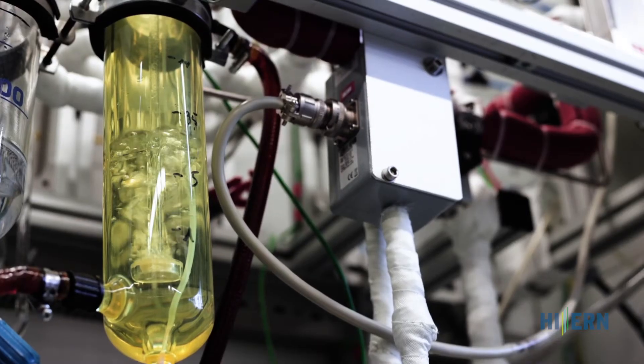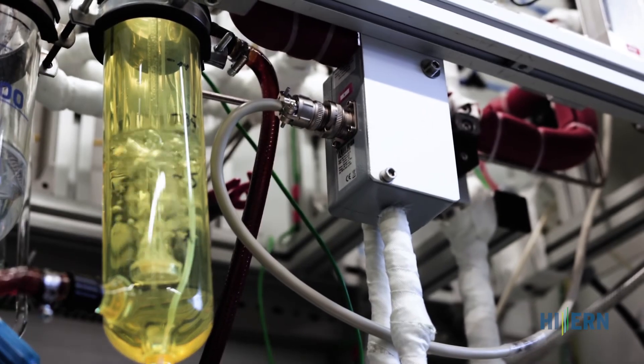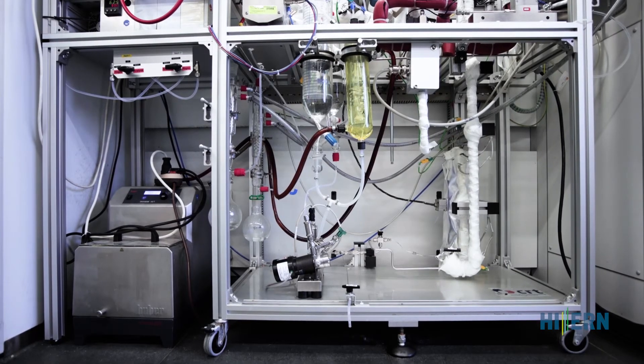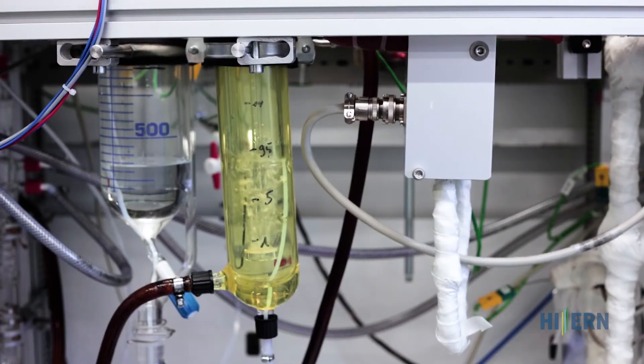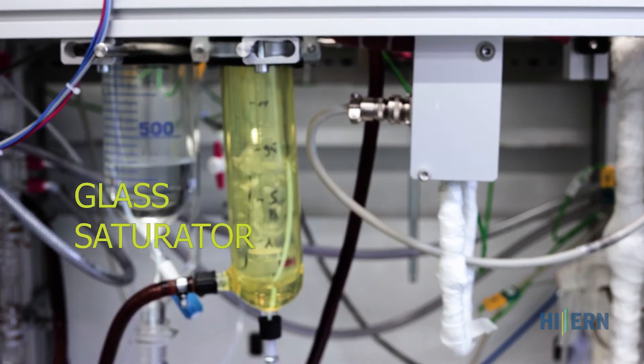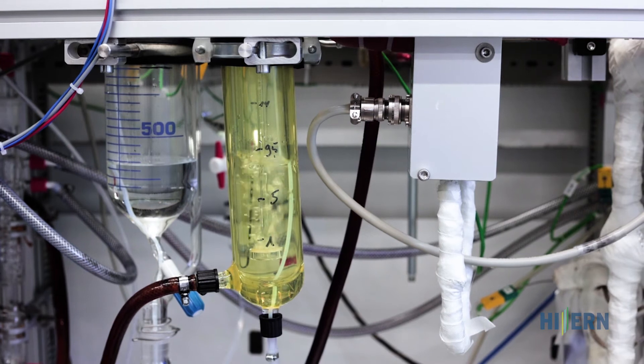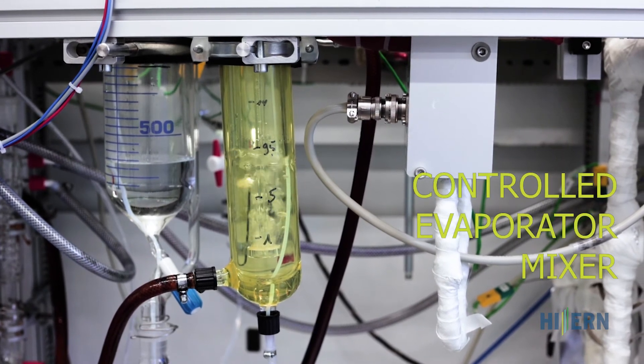The water balance is crucial for good proton conductivity and thus high power densities. Humidification of the cathode air takes place via a glass saturator. Humidification of the anode side takes place via a controlled evaporator mixer.